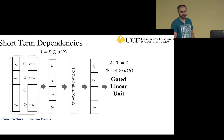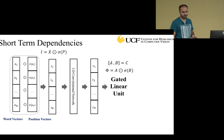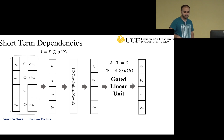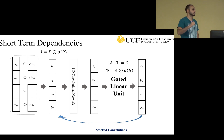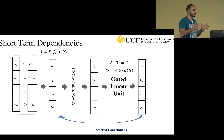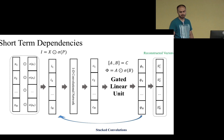The gated linear unit splits its input into two halves and uses one half as a gate on the other. We can stack these convolutional blocks to go deeper — in my implementation I had two of these — which expands the receptive field of these convolutions. Finally, we get the output, which is the reconstructed word vectors.